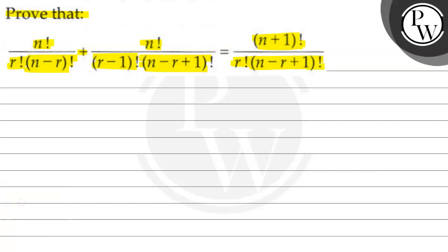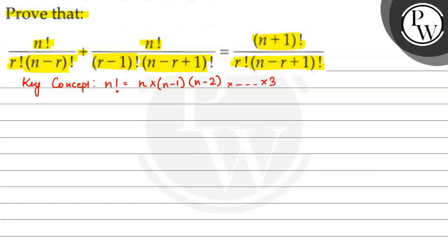That is always the key concept. The key concept is that for any number's factorial, n factorial means n multiplied by n minus 1 multiplied by n minus 2, and so on, up to 3 multiplied by 2 multiplied by 1. That is the meaning of n factorial.